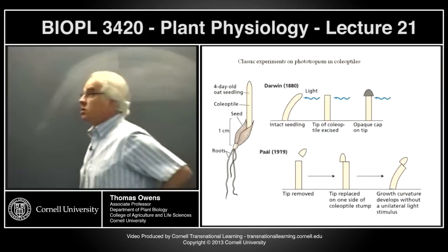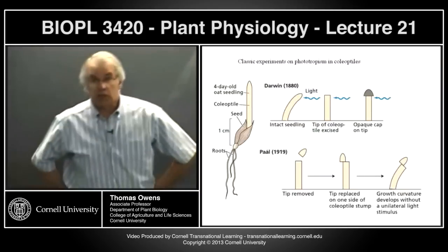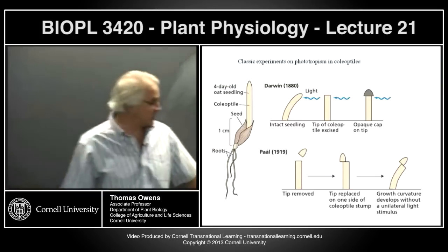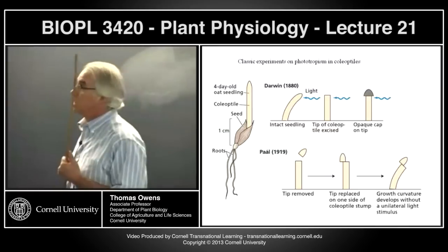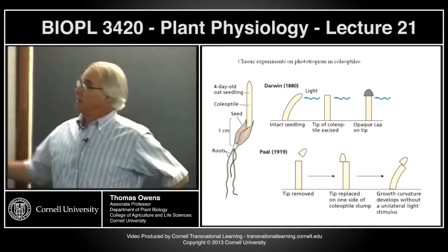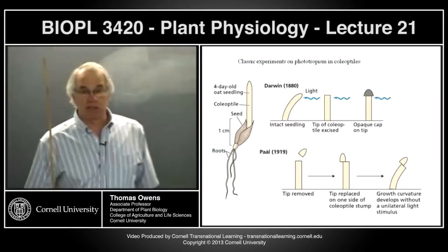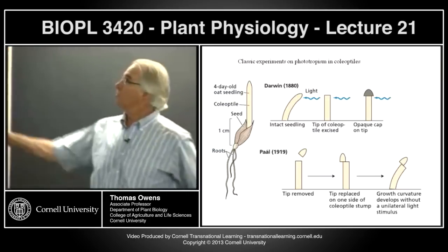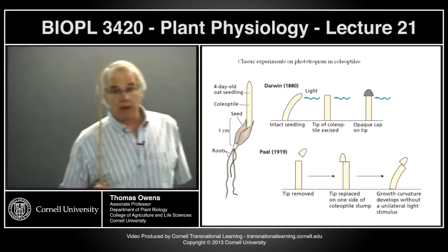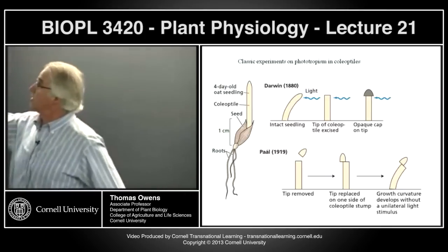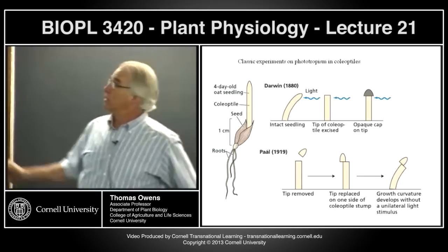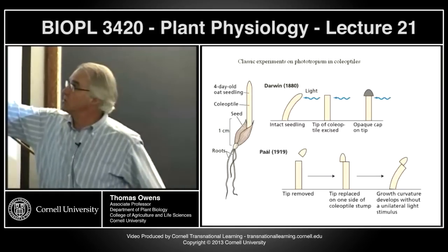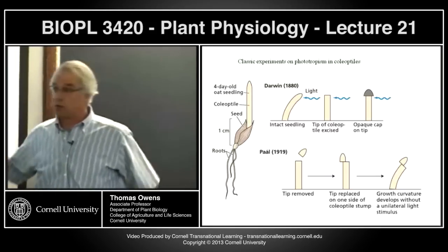The initial experiments that suggested a mobile information-carrying compound came from Charles Darwin and his son Francis, who did experiments with blue light and oat coleoptiles and saw that the coleoptiles bend toward the light. They did fairly clever experiments demonstrating that it's the tip of the coleoptile that's responding to the light. If you cover the tip with something opaque, it no longer responds to directional light even if you shine the light on the lower part of the coleoptile. The part that responds is down below—there's differential elongation so cells on one side grow faster than the other, which causes the bending.